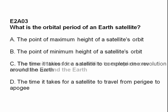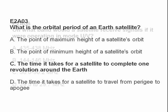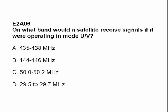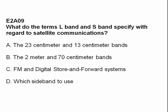What is the orbital period of an earth satellite? Answer C: the time it takes for a satellite to complete one revolution about the earth. On what band would a satellite receive signals if it were operating in mode UV? Answer A: 435 to 438 megahertz. What do the terms L band and S band specify with regard to satellite communications?